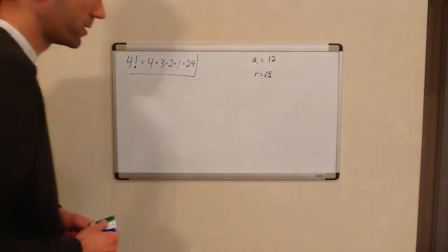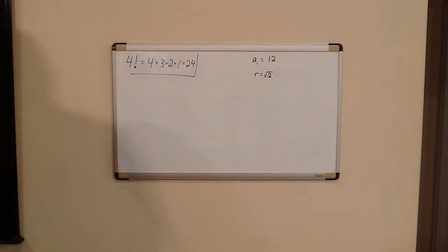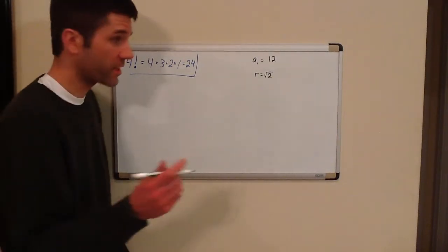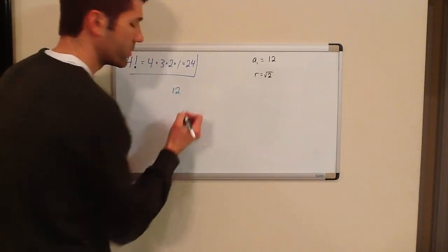A sub 1 is 12 and r is square root of 2. What that means is, first of all, it tells me it's geometric. I know it's geometric because it says so and also because it gives me a common ratio. So I know the first one is 12.